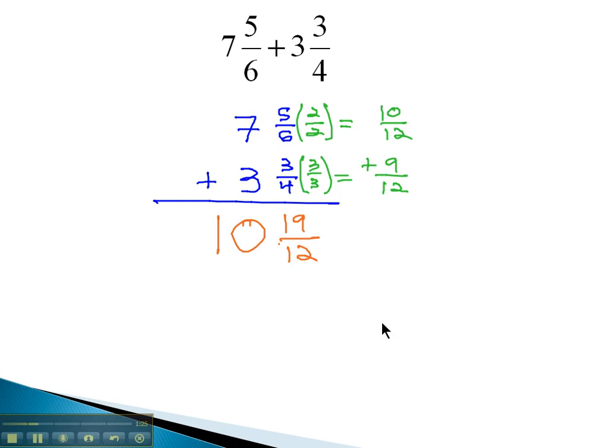But we have a problem in that the fraction part of this mixed number, 19 twelfths, is bigger than 1. The numerator is greater than the denominator. So what we are going to do is take this fraction, the 19 twelfths, and convert it to a mixed number.